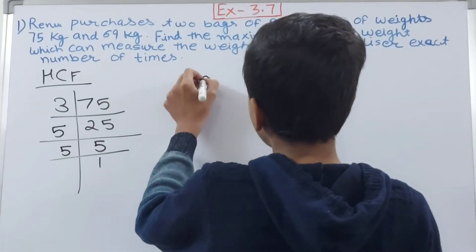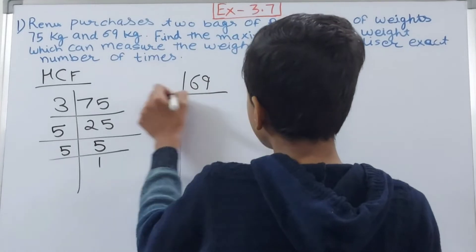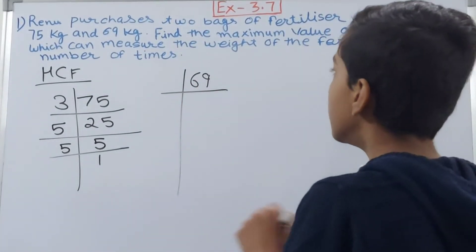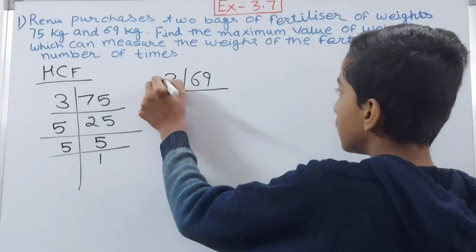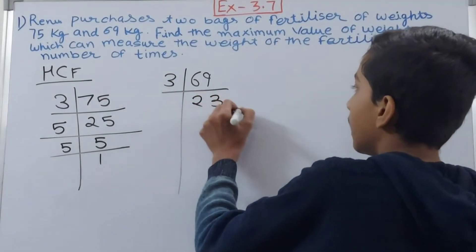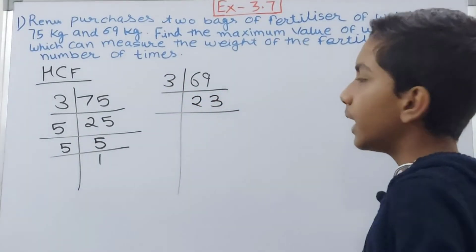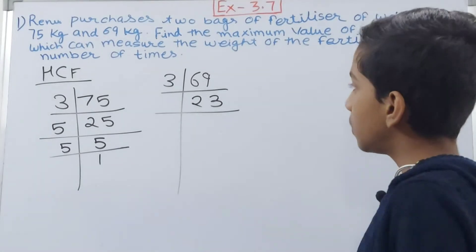Next we have 69. Let us see for 69 also. So it will not go by 2. It will go by 3, giving us 23.